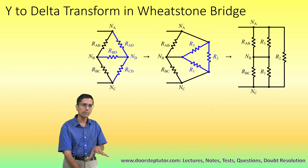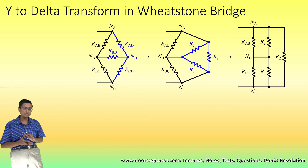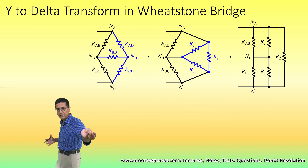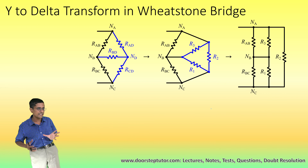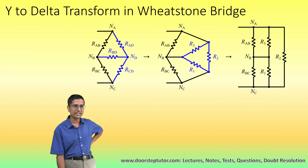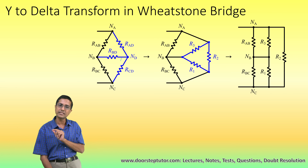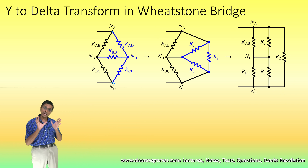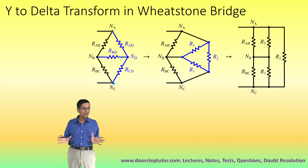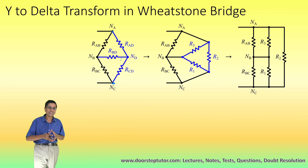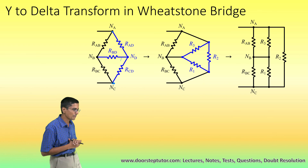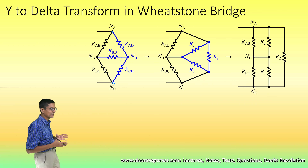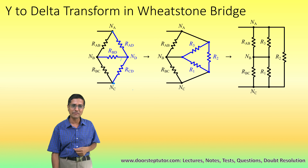Now let us use this technique to simplify the Wheatstone bridge circuit, since finding the equivalent resistance between Na and Nc is our objective. As soon as we see the Wheatstone bridge, the first thing we should do is pray that it is balanced — if it is balanced, nothing flows through Rbd and we can remove it and simplify very simply. But if the circuit is not balanced, then we really have to use the Kirchhoff laws, and we get stuck because we cannot do it in 30 seconds.